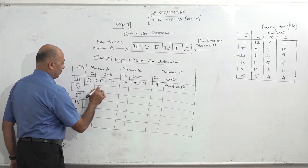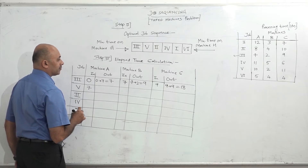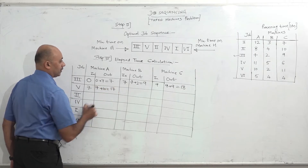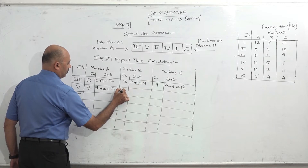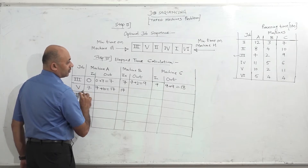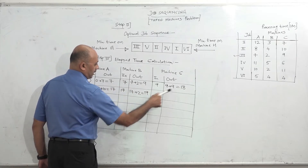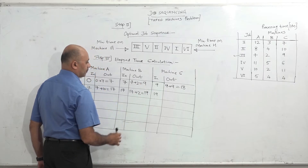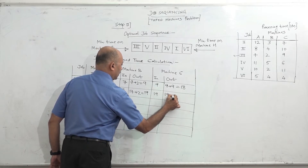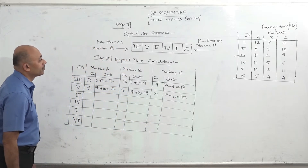Job 5: time on A is 10, in-time is 7, so out-time is 7 plus 10 = 17. In-time on B is maximum of 17 and 9 = 17. Time on B is 2, so 17 plus 2 = 19. In-time on C is maximum of 19 and 18 = 19. Time on C is 11, so 19 plus 11 = 30. Job 5 is done.